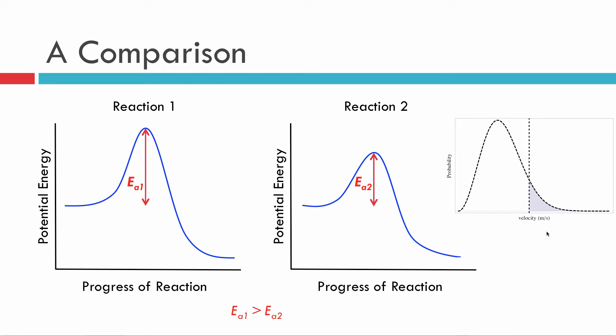So we can imagine some line here being some particular amount of energy that the average collision must have to overcome the barrier of reaction 2.